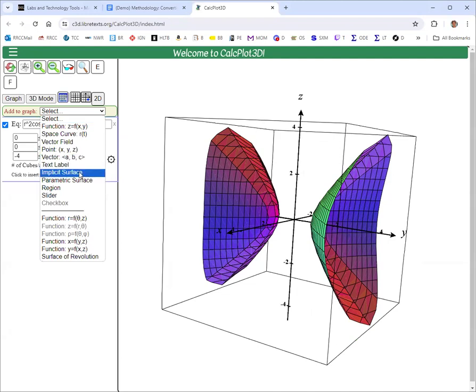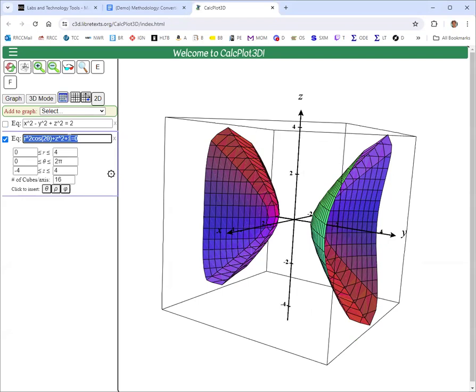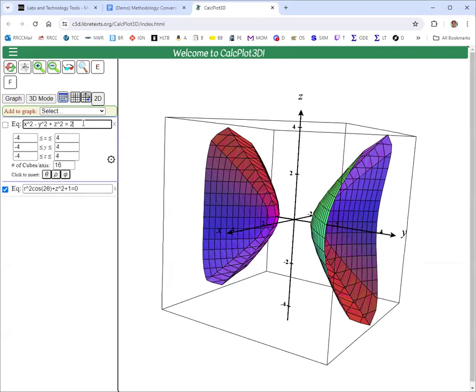That's also an implicit surface. We just use x, y, and z. Somehow knew that we'd want to do that, huh? So y squared minus x squared minus z squared is one.